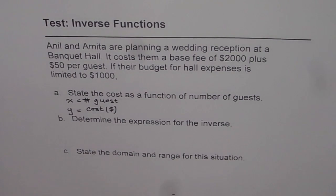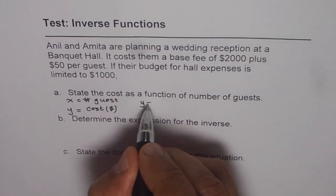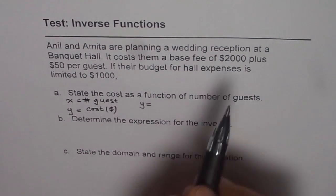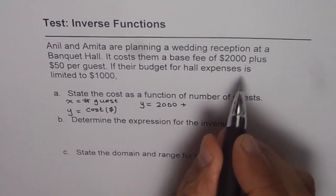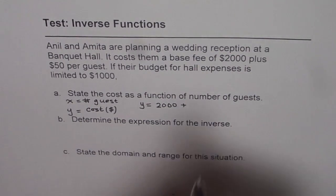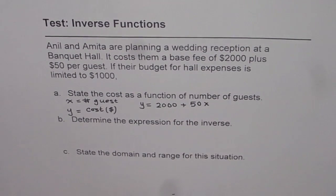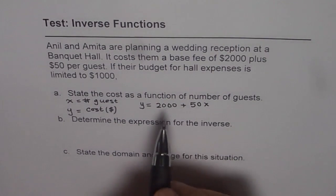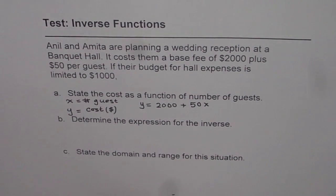Now we can write down the equation. The equation is y equals cost, which is $2,000 plus $50 per guest. So that becomes the equation of the function. We have related guests with the cost in this function.